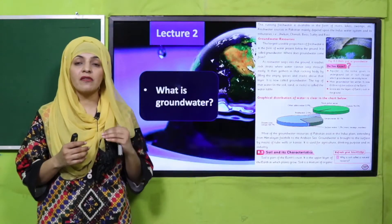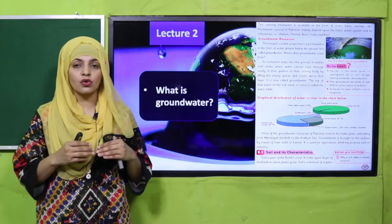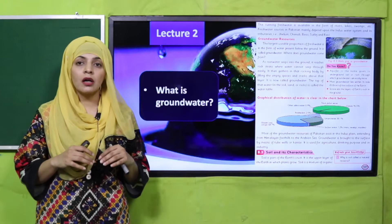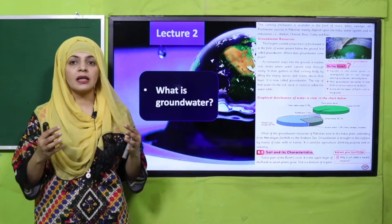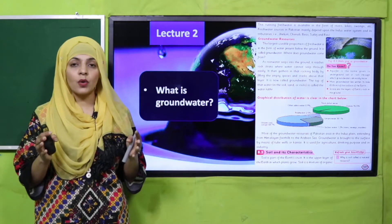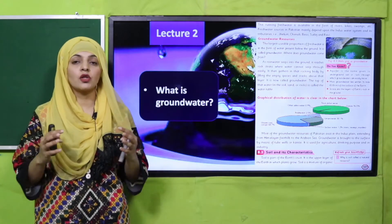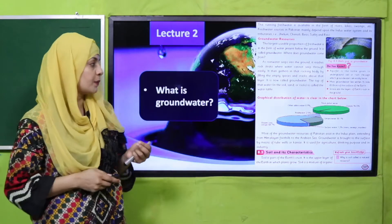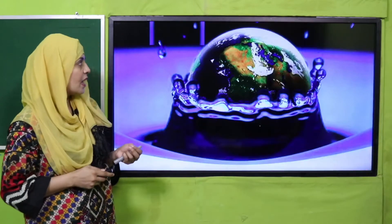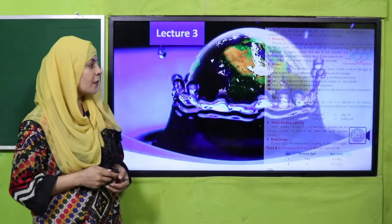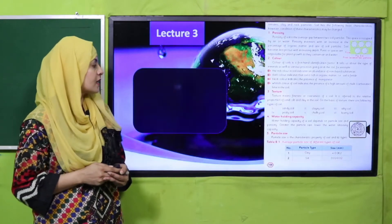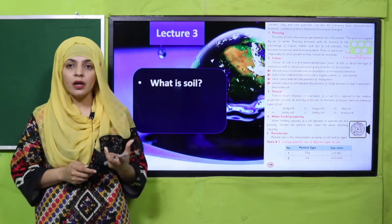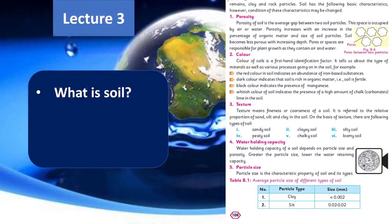So what is ground water? Ground water jo hai wo aisa water hota hai jo ke rain ki vajah se seep ho jata hai into the ground, aur jo ke vahan ja ke strata ke upar akatha hota jata hai — that is the ground water.